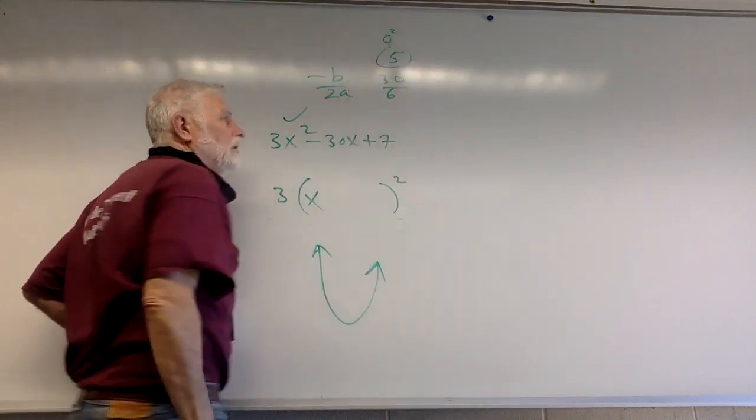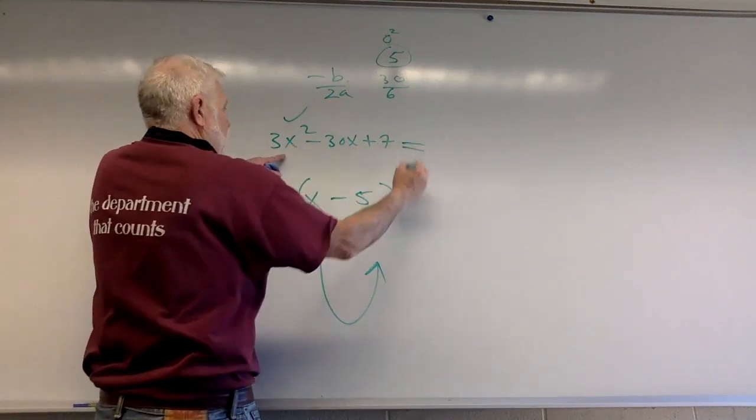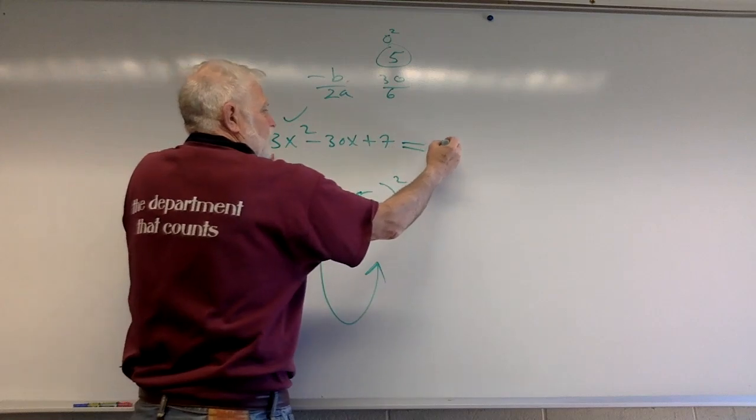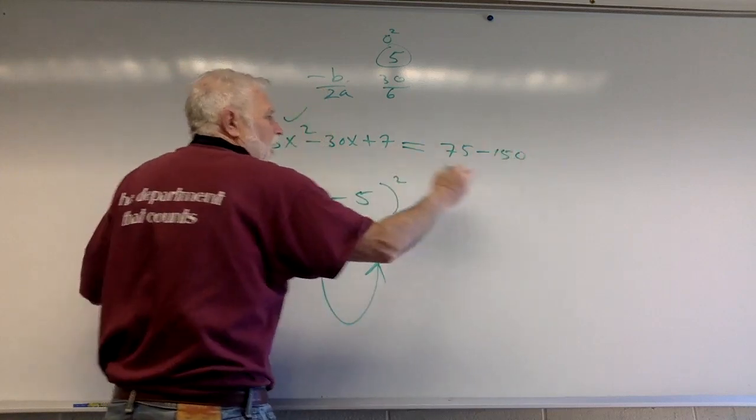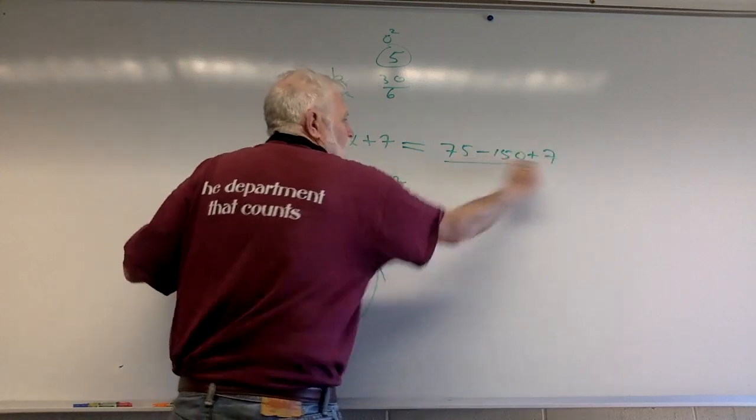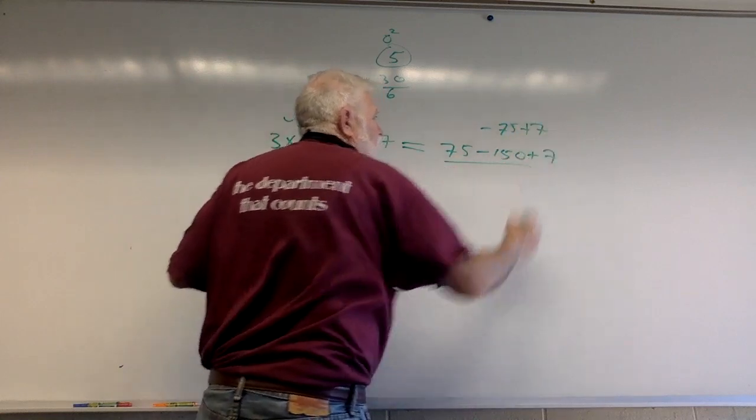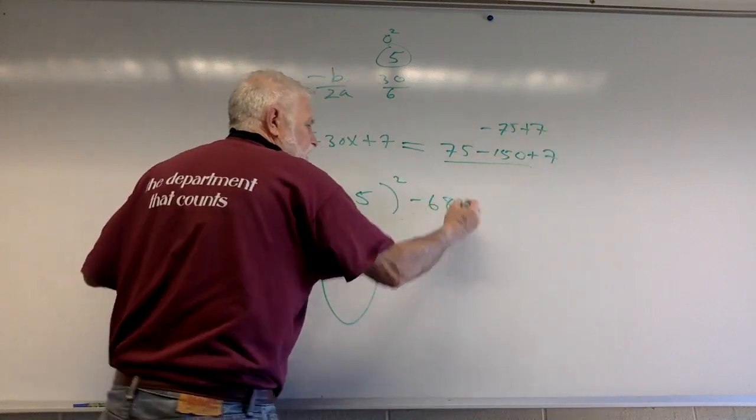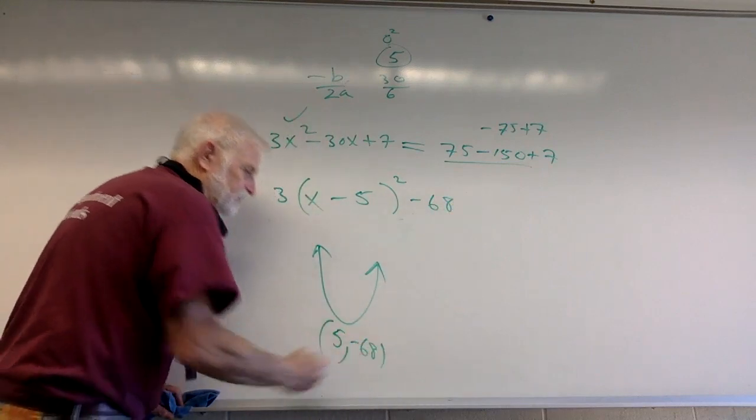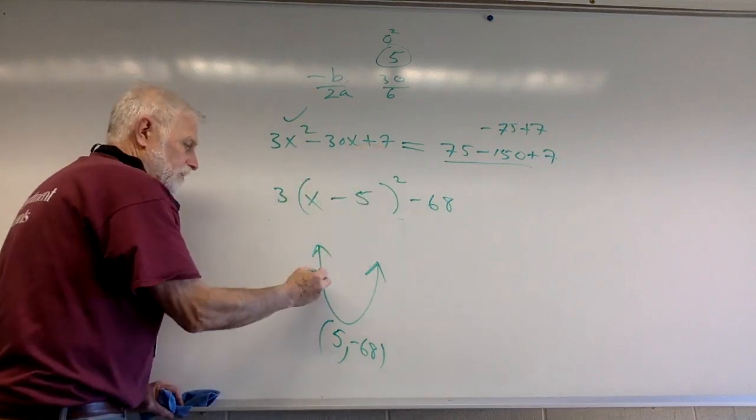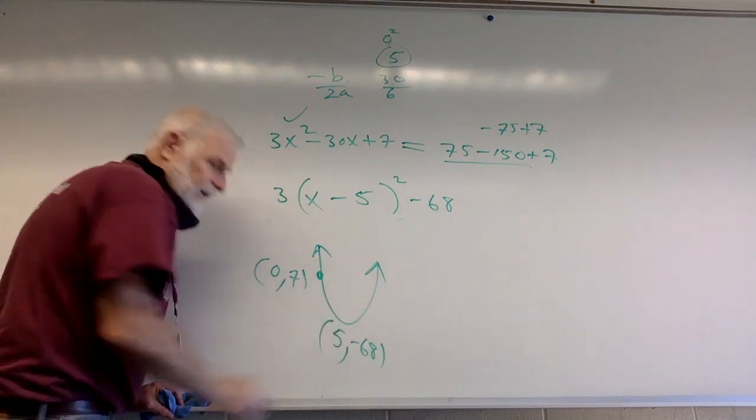Then I drop a 5 in. If I drop a 5 in, I get 5² times 3 is 75, 5 times -30 is -150, and I got a positive 7. So that's half of this: -75+7. I now know that that is -68. That's the graphing form. So I now know that's (5,-68) and the original (0,7) is on this side, the decreasing side. I got a quick sketch.